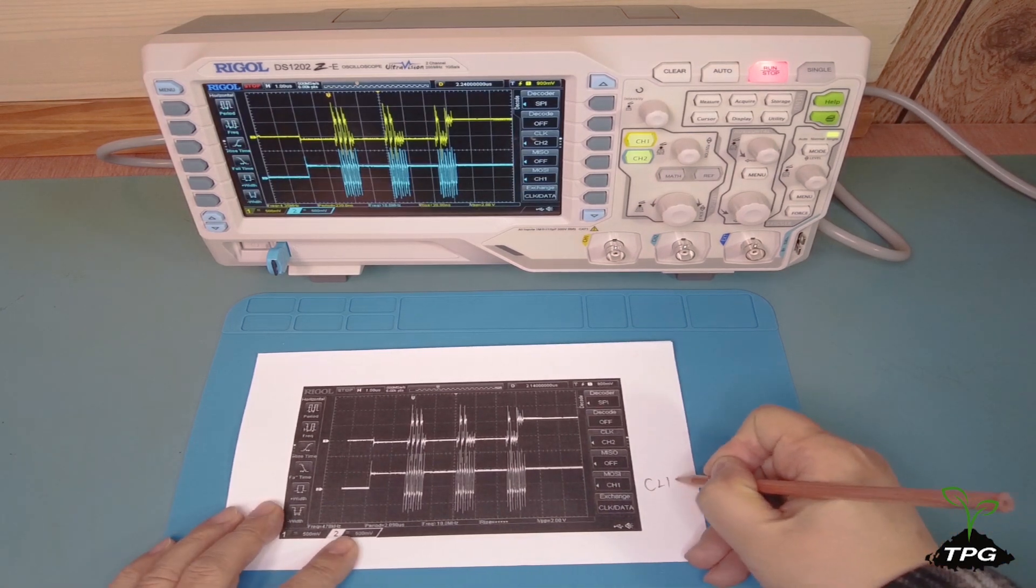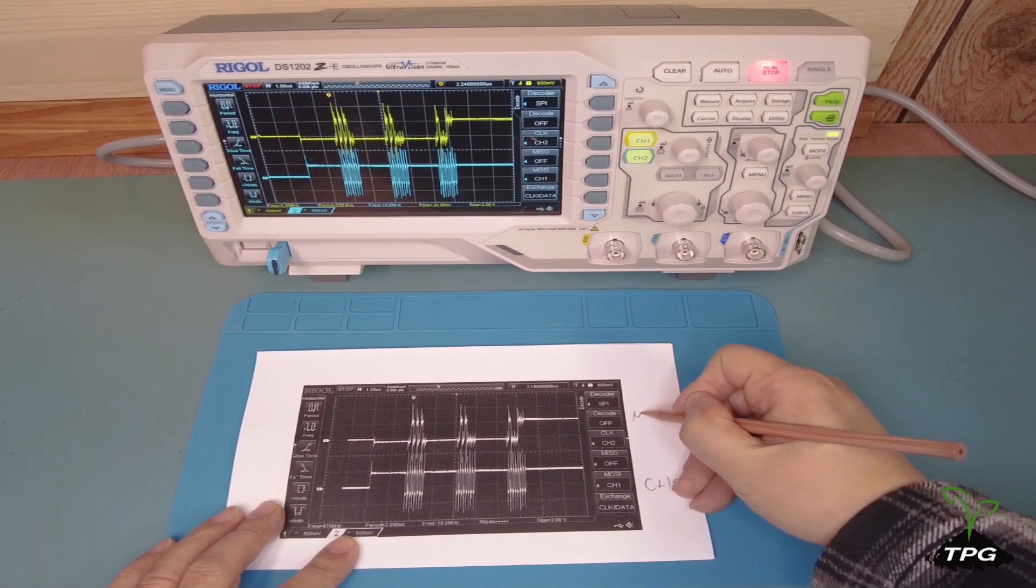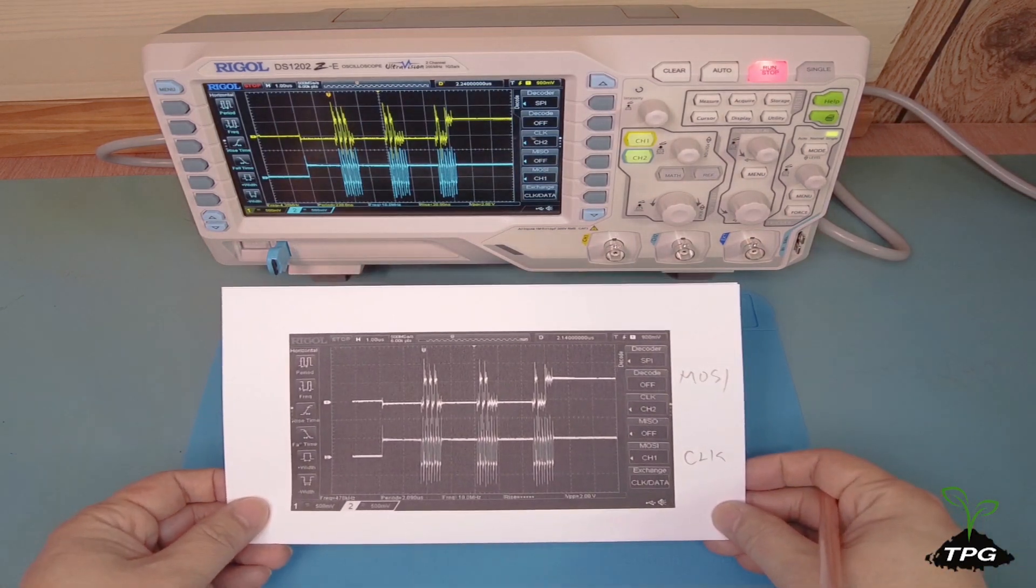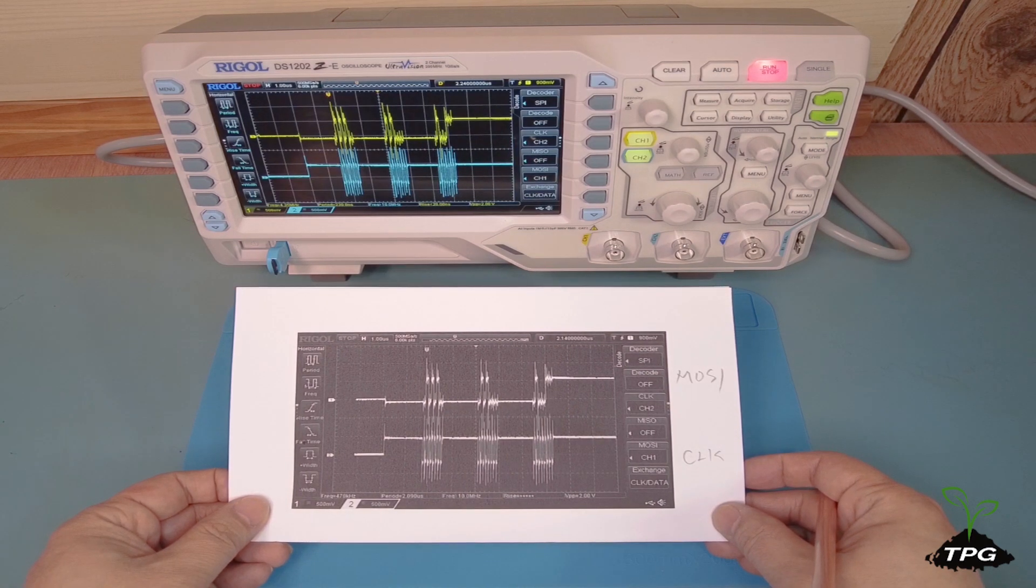For more details, please refer to the video titled SPI decoding with an oscilloscope. Since writing on the oscilloscope screen is not advisable, the waveforms are printed on paper instead.